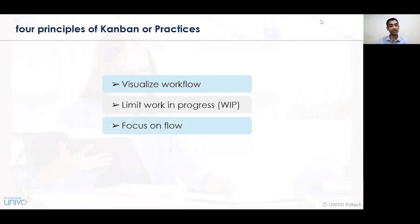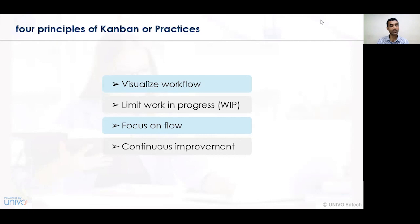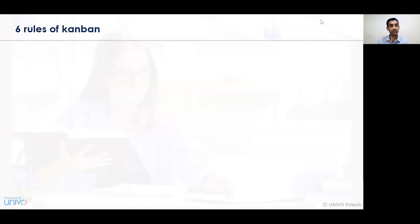Third, focus on a certain flow — on the basis of Kanban cards, we can identify and focus on what activities can be completed and in what level those activities can be conducted in a process way. A series of activities can be identified and the flow can be conducted in a better way. Fourth, continuous improvement — various steps can be undertaken and process flows can be improvised with the help of Kanban practices.